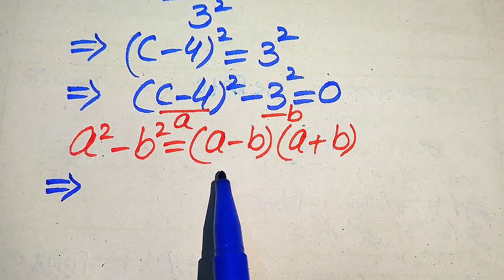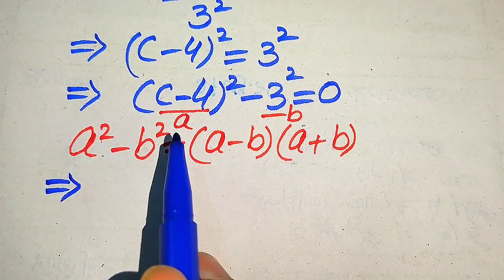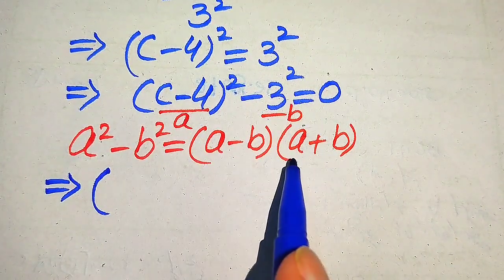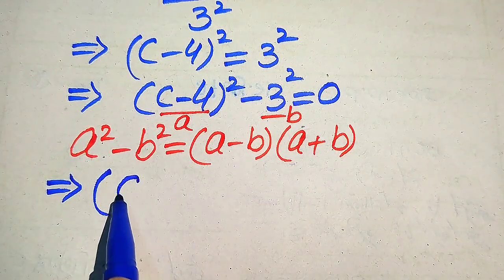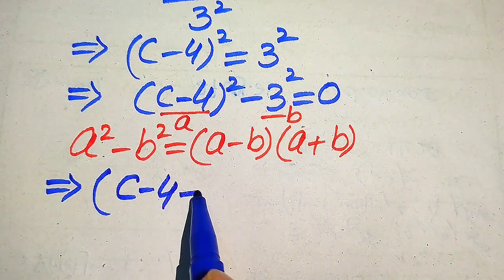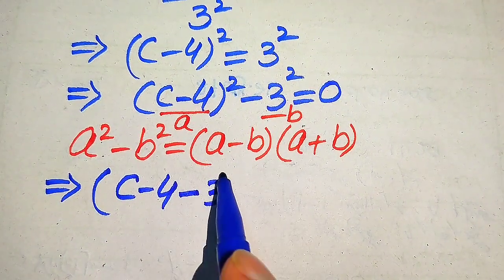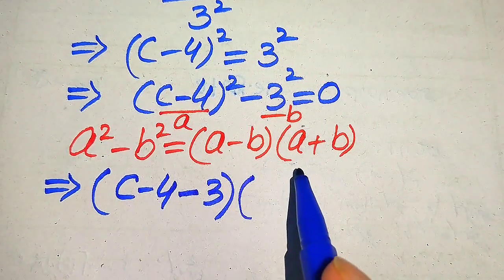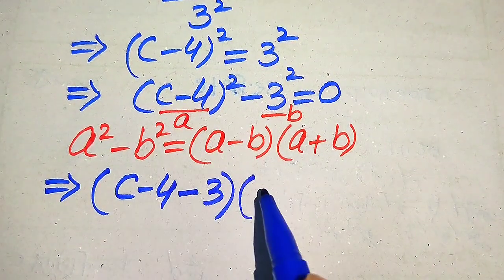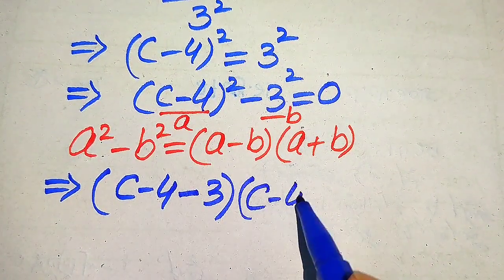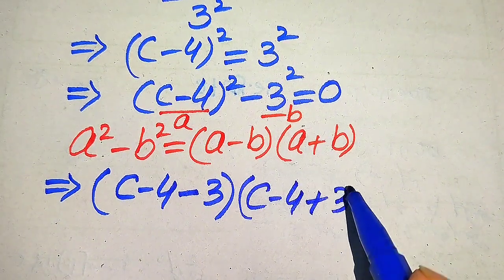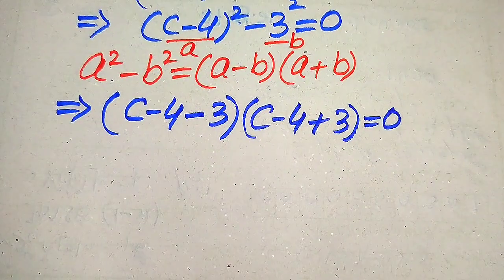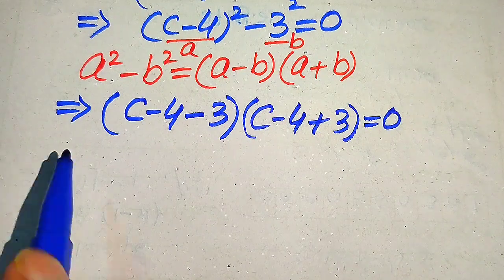The first factor is (a minus b), where a is (C minus 4), so it is written as (C minus 4 minus 3). The second factor is (a plus b), where a is (C minus 4) and b is 3, so it is written as (C minus 4 plus 3). This whole equation equals 0.